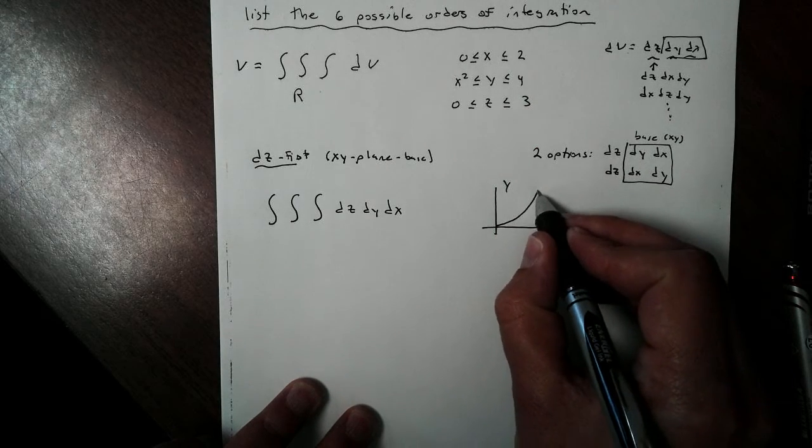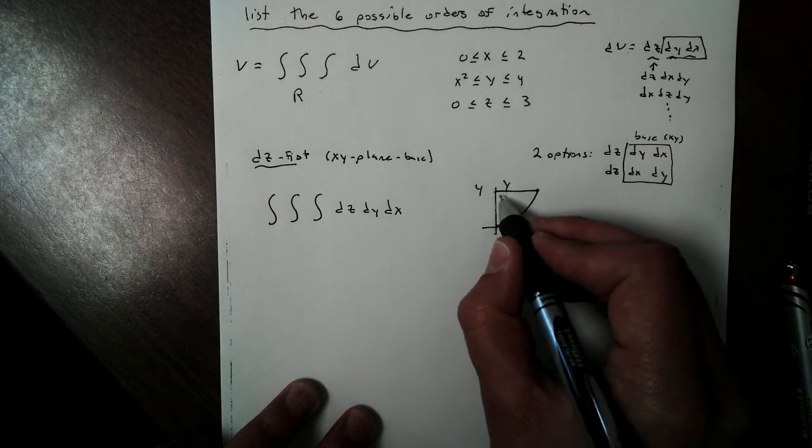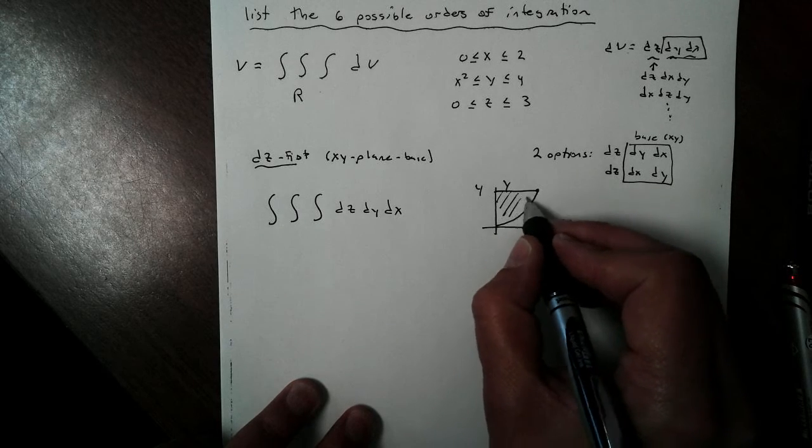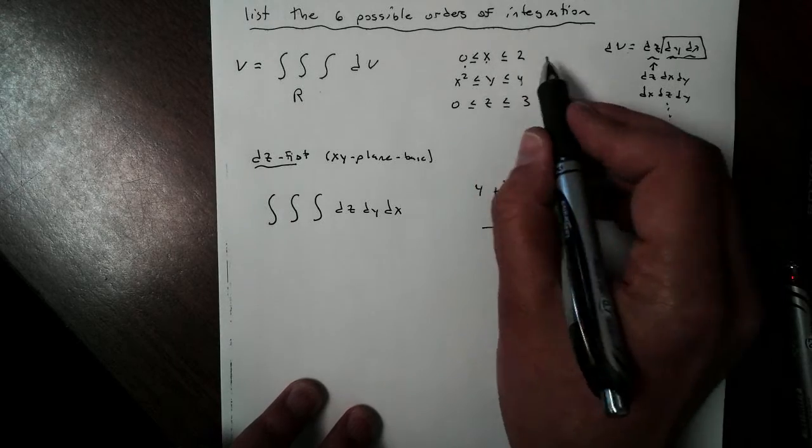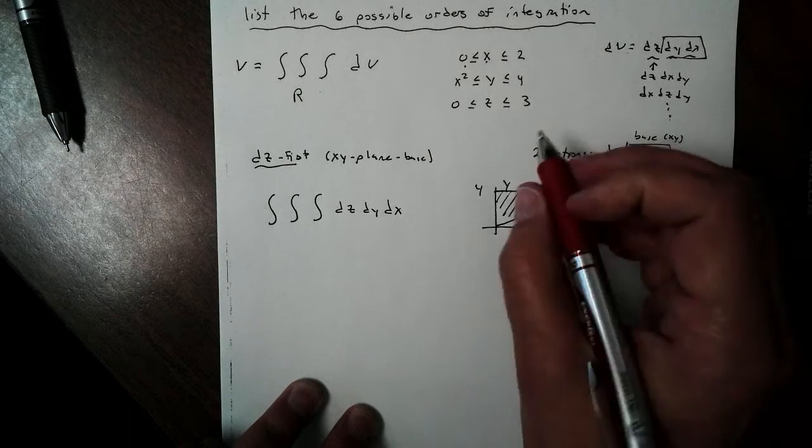So I'm going to graph this. My Y values are going to go from the parabola, X squared, to 4. So if I draw that parabola, draw this, there's Y equals 4. This is the region we are going to be looking for. And my X's go from 0 to 2, which should be right there.